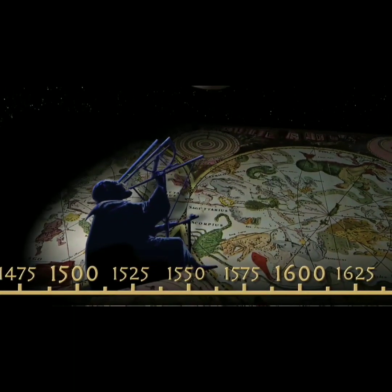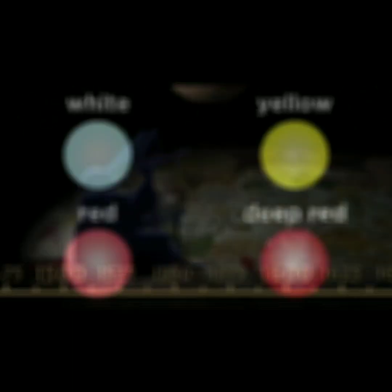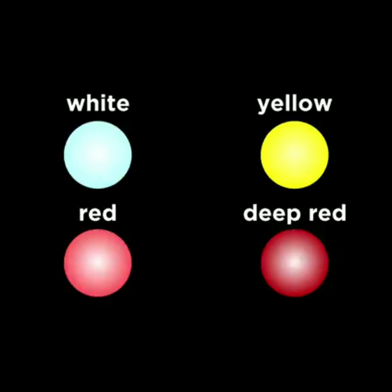When astronomers first started to observe stars in telescopes, they divided them into color classes: white, yellow, red, and deep red.